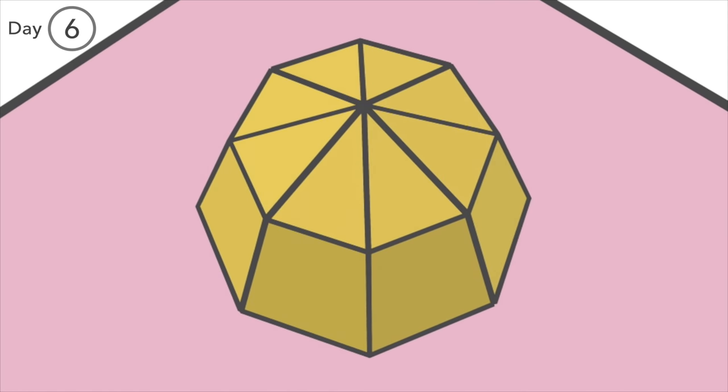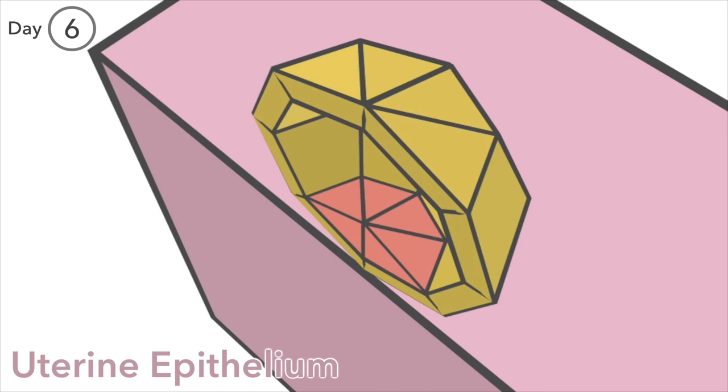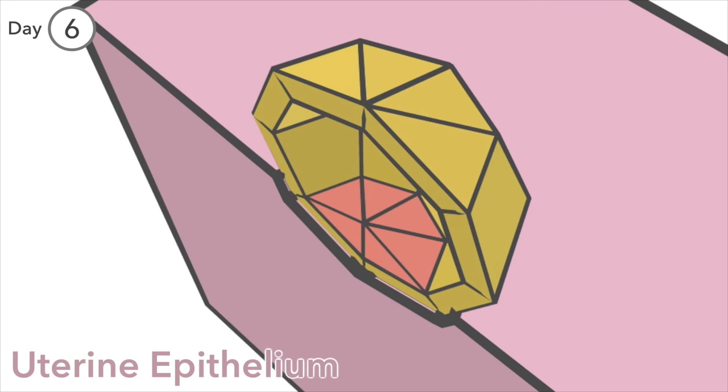Day 6. Trophoblast cells break down barriers in the uterine epithelium, allowing entry of the blastocyst.